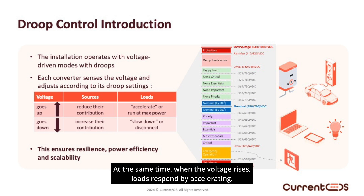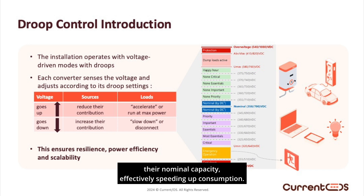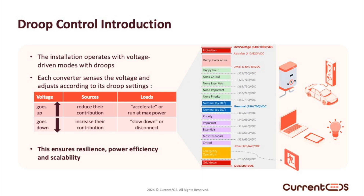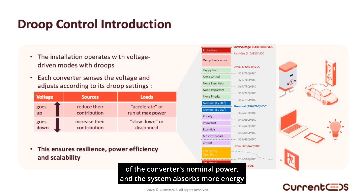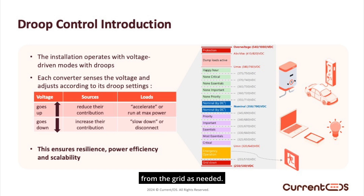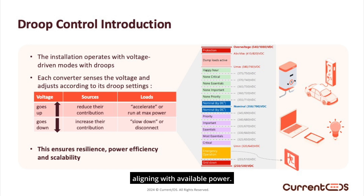At the same time, when the voltage rises, loads respond by accelerating. For instance, electric vehicles charge at full power, and water heaters operate at their nominal capacity, effectively speeding up consumption. Conversely, when voltage drops, each source works to increase its contribution. Batteries discharge faster within the limits of the converter's nominal power, and the system absorbs more energy from the grid as needed. Meanwhile, loads adjust by slowing down — water heating and EV charging rates are reduced, aligning with available power.